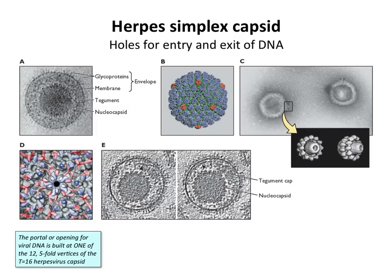Herpes virus has an interesting feature: it's built with icosahedral symmetry, so theoretically all 12 fivefold axes should be the same, but on the herpes capsid one of them is different — it has what is called a portal, an opening. You can see it in the electron micrograph. It is believed this is how DNA is put into the capsid during assembly and perhaps how it gets out. So an interesting spin on icosahedral symmetry is to make this one asymmetrical portal among the otherwise equivalent fivefold axes.